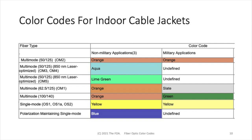The right-hand column shows different color codes used by the military. They basically use orange for 50/125 fiber, slate for 62.5, and green for multimode 100-140 fiber, which hasn't been used for most indoor applications in decades, but is still used in places in the military. And of course, they still use yellow for single mode.